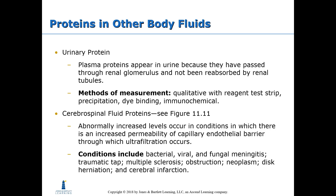Cerebrospinal fluid proteins are normally increased in conditions where there is increased permeability of the capillary endothelial barrier. This can include bacterial, viral, and fungal meningitis; traumatic tap; multiple sclerosis; obstruction; neoplasm; disc herniation; and cerebral infarction. This concludes the lecture on proteins and amino acids — next up will be enzymes.